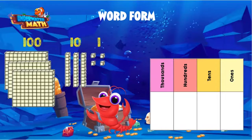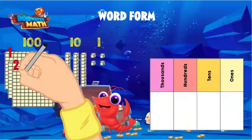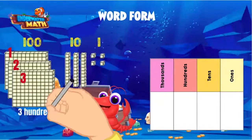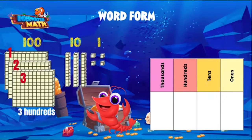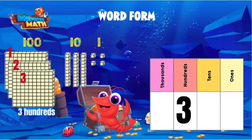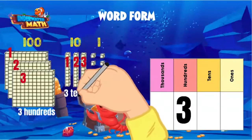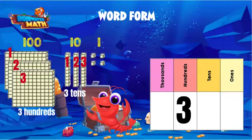How many hundreds do we have? 100, 200, 300. What is the value of three hundreds? 300. How many tens do we have? One ten, two tens, three tens. What is the value of three tens? You got it — 30.